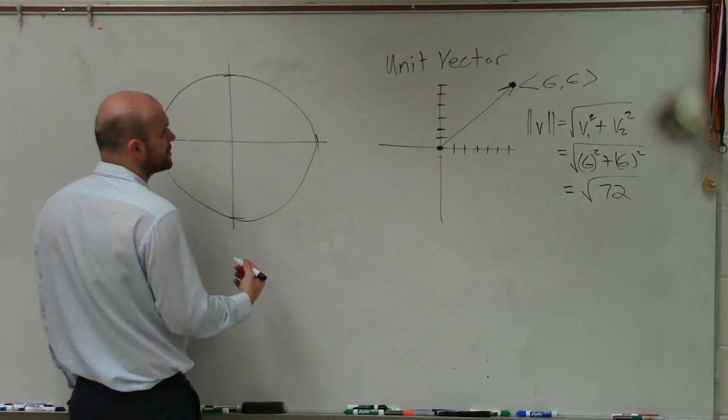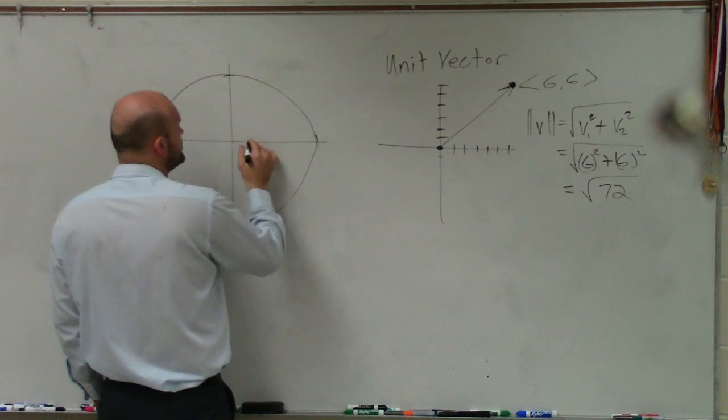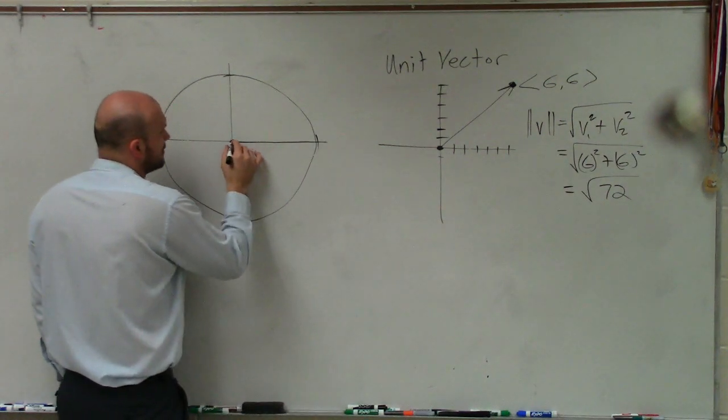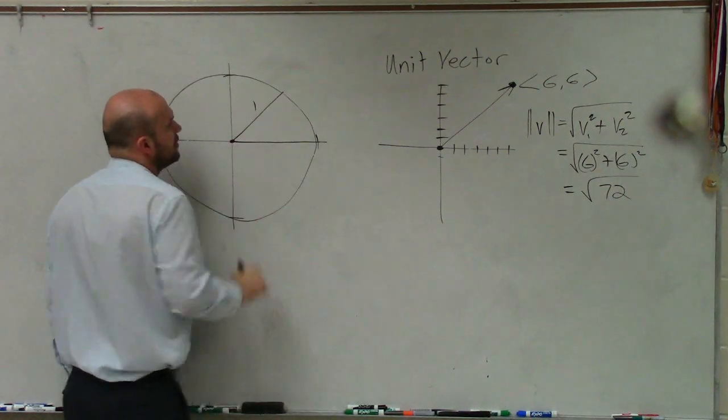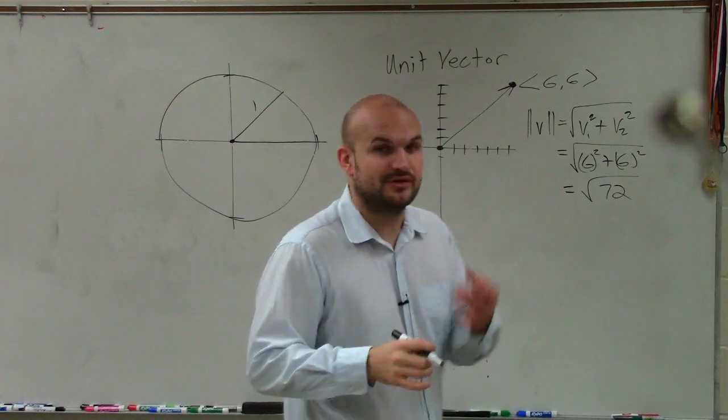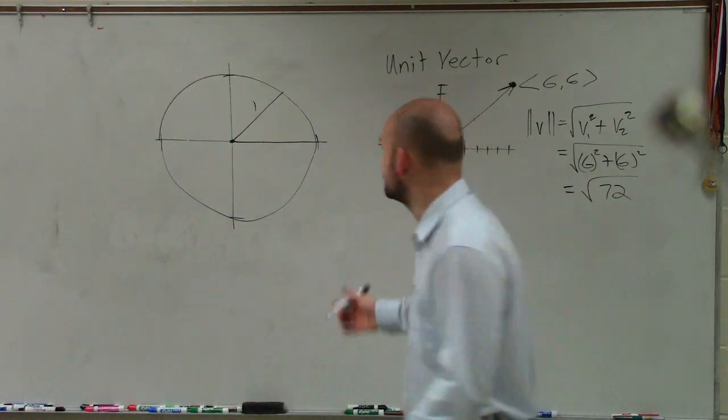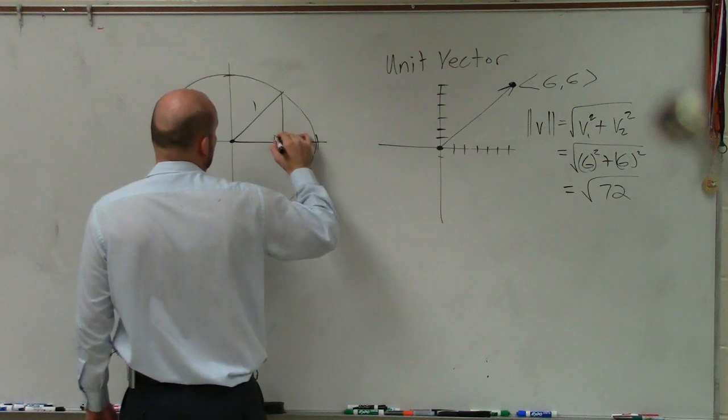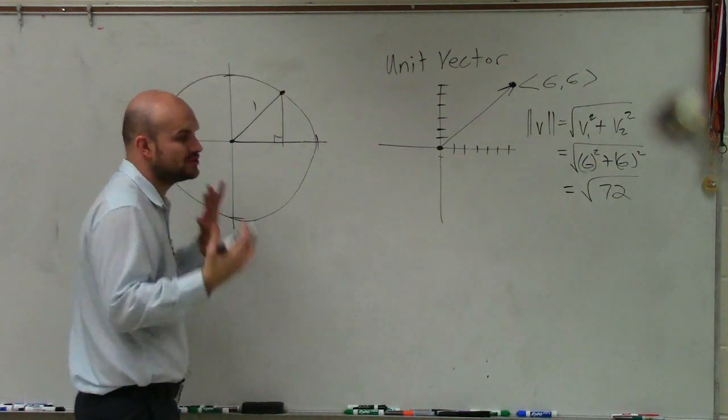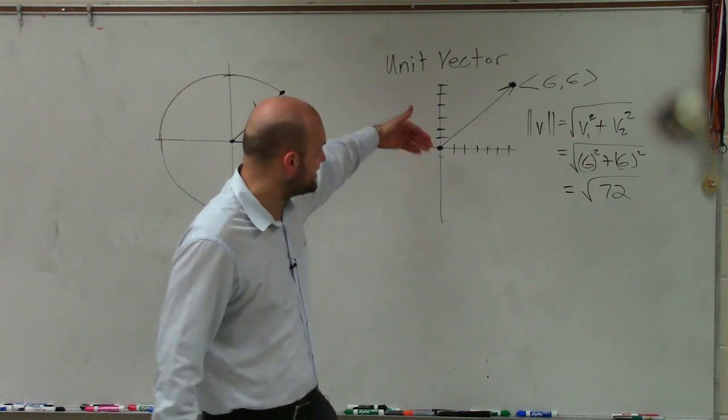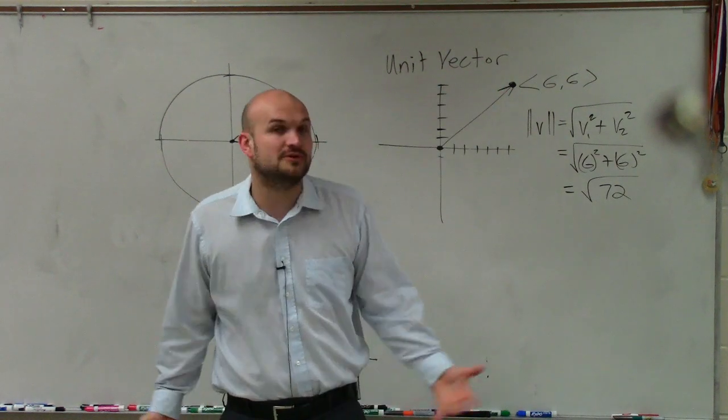But when we knew there was points on the unit circle, we could evaluate for those angles, right? So the unit circle was very helpful. And one of the reasons why that unit circle was so helpful is because we knew that the distance for any point on the unit circle, that distance was going to be 1 on the hypotenuse, right? Because what we'd do is we'd create right triangles and we'd have a coordinate point and so forth. So when we're looking at vectors, you can see this vector has a magnitude of square root of 72.